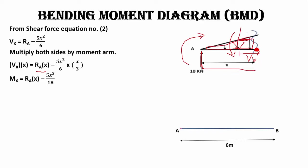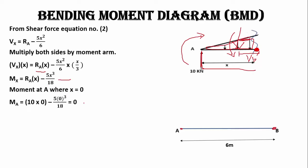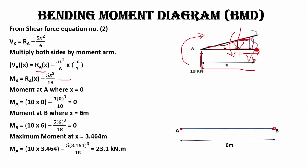To draw the bending moment diagram we evaluate at three points. At A (x = 0): M = 0. At B (x = 6 m): M = 0. At x = 3.464 m where shear force is zero, the bending moment is maximum at 23.1 kilonewton-meters. This gives us our bending moment diagram with the peak at 3.464 meters.